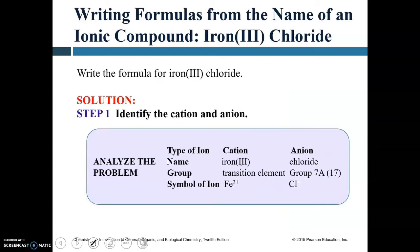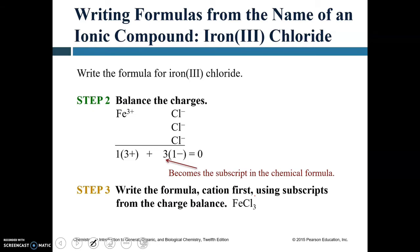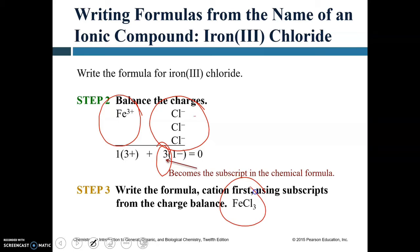Writing the formula for iron(III) chloride: the cation is iron with +3 charge; the anion is chloride with -1 charge. To balance one triply-charged iron, you need three chloride ions. That multiplier of 3 becomes a subscript — the formula is FeCl₃.